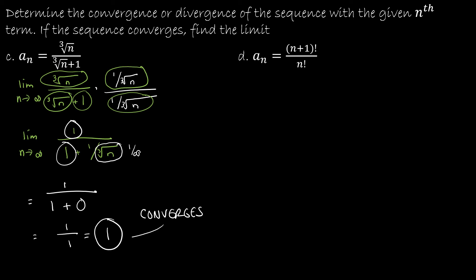Let's take a look at our second example: a sub n equals n plus 1 factorial over n factorial. So I'm trying to find the limit as n approaches infinity of n plus 1 factorial over n factorial. You might not have dealt with factorial questions for a while, but it's something that's going to keep coming up throughout your mathematical journey.